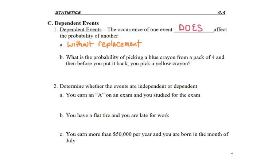And so here's an example. What is the probability of picking a blue crayon from a pack of four, and then before you put it back, you pick a yellow crayon? So you didn't see the words without replacement, but because it says, and then before you put it back, that is the same thing as saying without replacement.